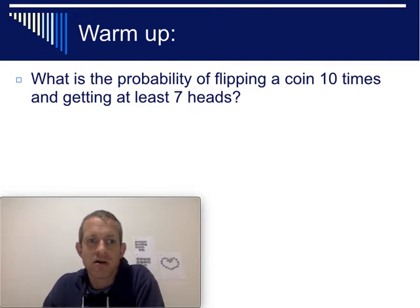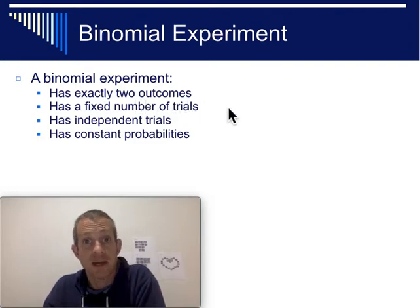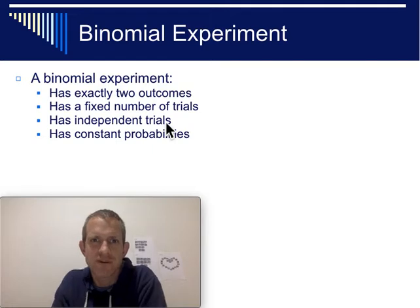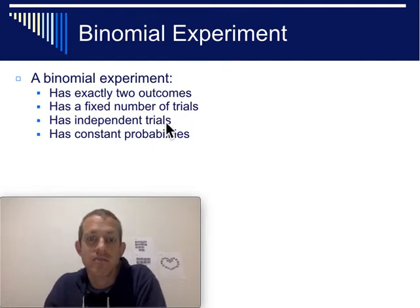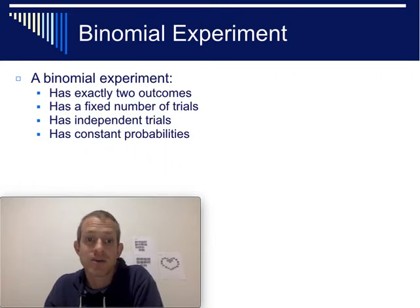That's an example of what we call a binomial experiment. To truly classify as a binomial experiment, you need to have something that's repeatable and has exactly two outcomes — in this case, coin flipping gives either heads or tails. You need a fixed number of trials, so that would be ten, and those trials need to be independent of each other, meaning the result of the first trial doesn't influence later trials. They also have to have constant probabilities. With a coin it's 50% heads or 50% tails, and those probabilities can't change throughout the problem. If you have something like that, it qualifies as a binomial experiment.